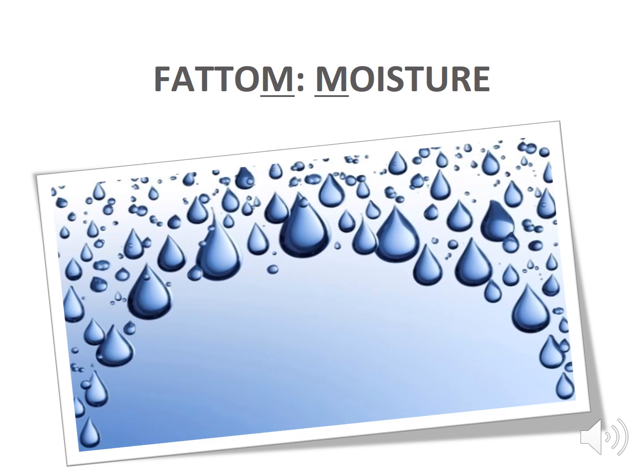All life needs water to grow. In food preservation, we control moisture by drying to remove moisture, or by adding sugar in jam and jelly to tie up the moisture so it's not available for the bacteria.